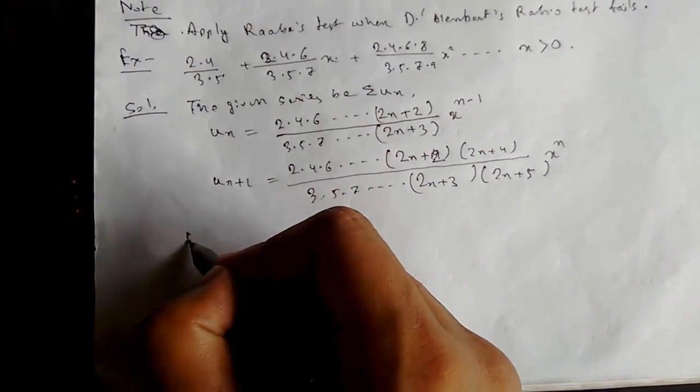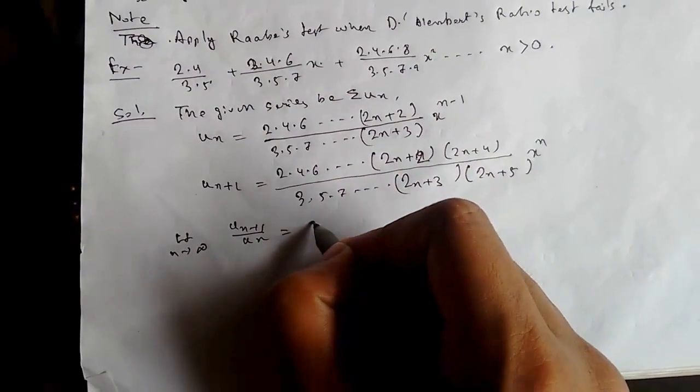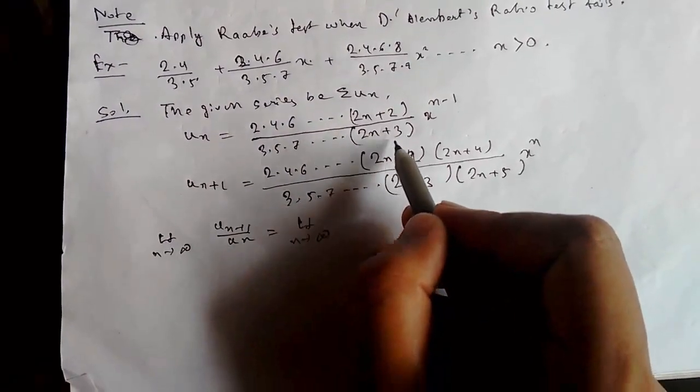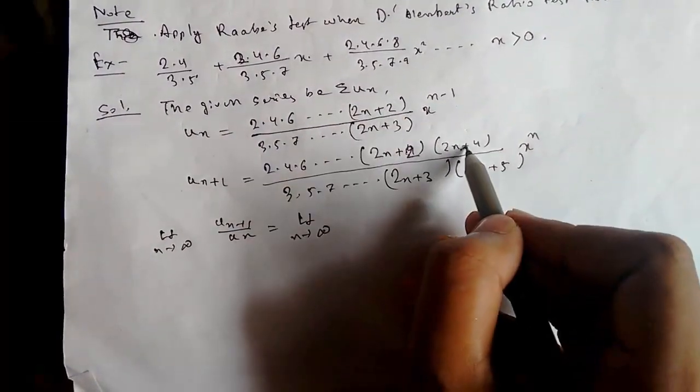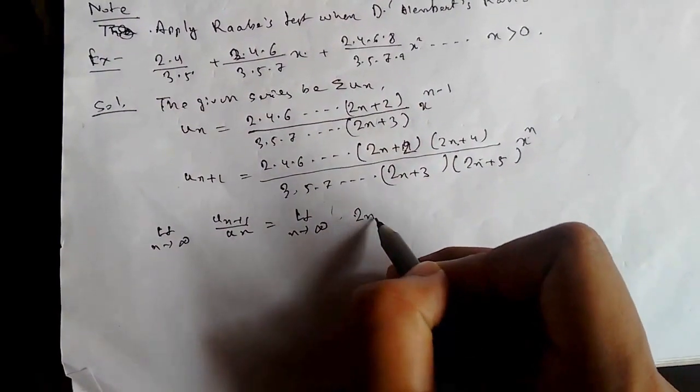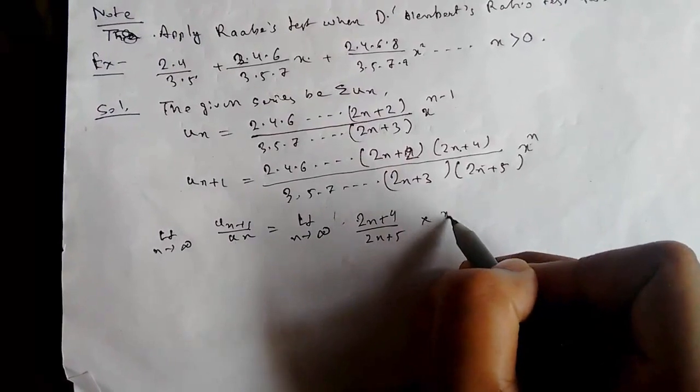So now applying UN+1 upon UN, we get limit n tending to infinity... this part will get cancelled out, and this will be left: (2n+4)/(2n+5) times (2n+3)/(2n+2) times x to the power n upon x to the power n-1.